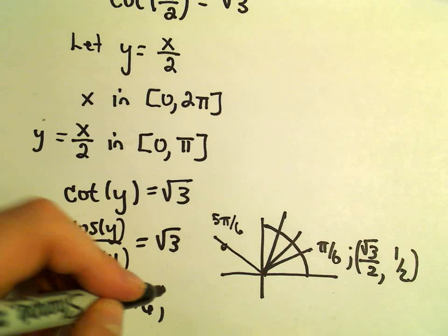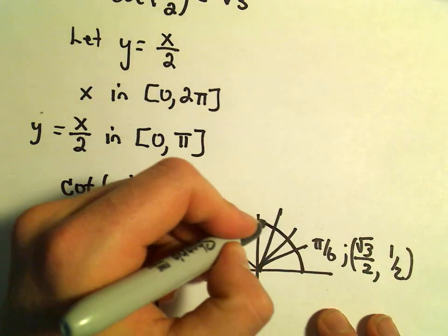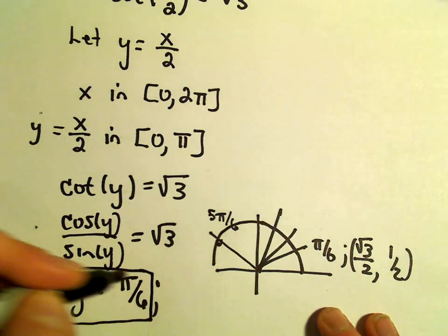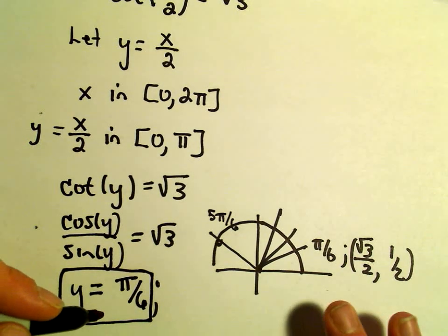So I take it back. There's actually no other solutions in the interval from 0 to pi. So we've only got one solution. It says y would have to equal pi over 6.